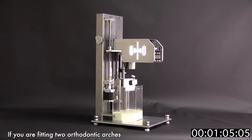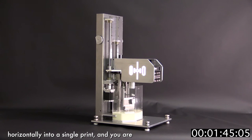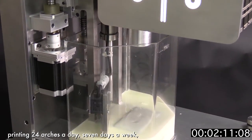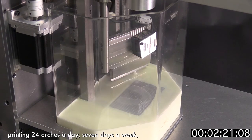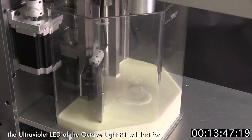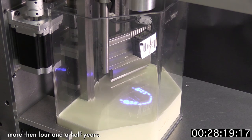If you are fitting two orthodontic arches horizontally into a single print and you are printing 24 arches a day, seven days a week, the ultraviolet LED of the Octav Light R1 will last for more than four and a half years.